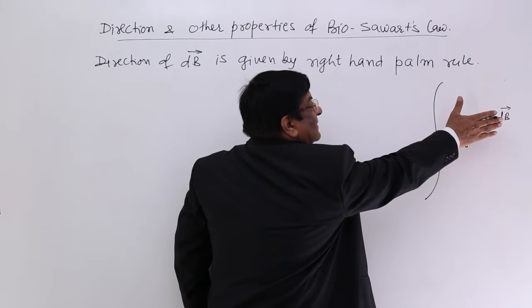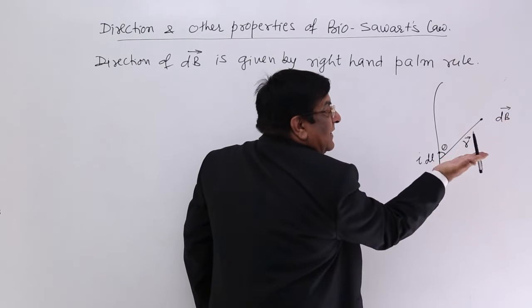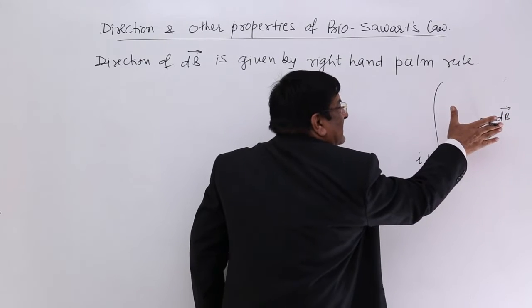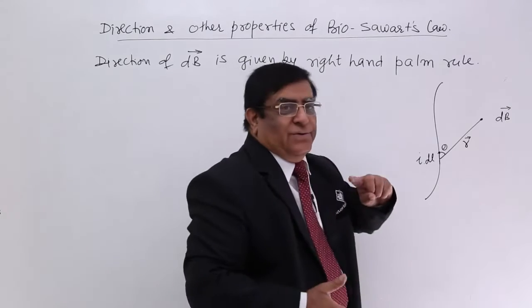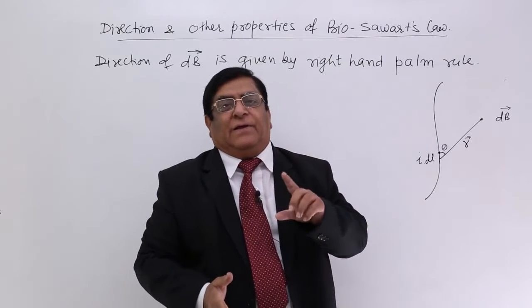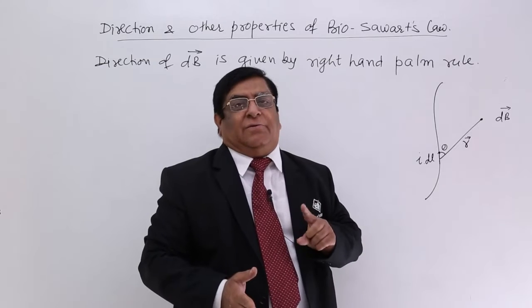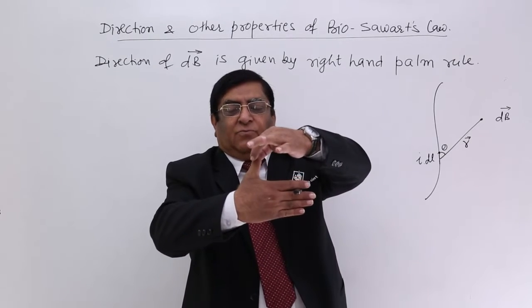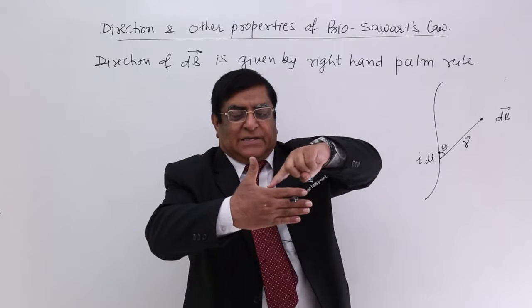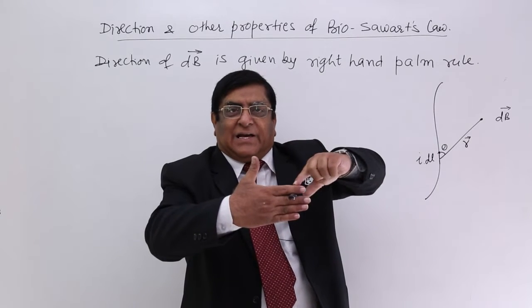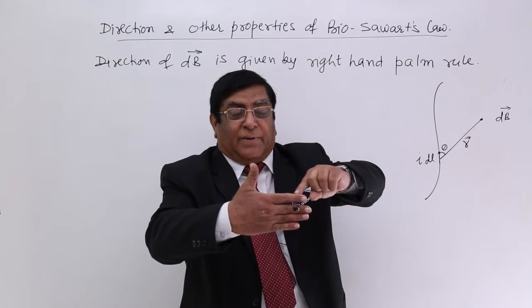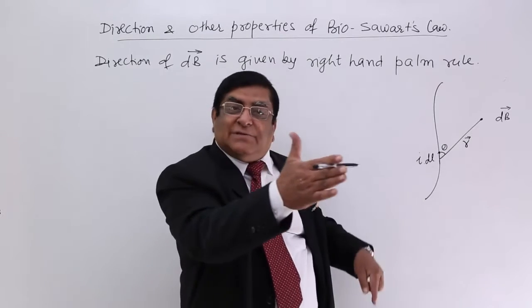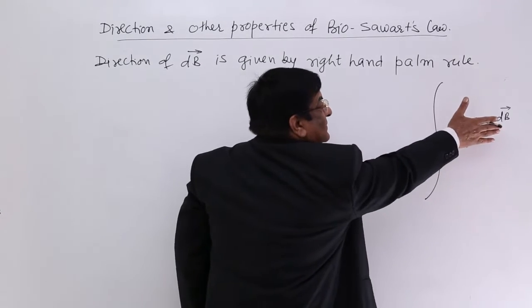So this the magnetic field is going inside here. And I told you in the beginning in magnetic field studies we must be able to imagine all the three dimensions. So this I am putting in Y direction. This R is in X direction. So magnetic field will be in Z direction inside. Third direction.